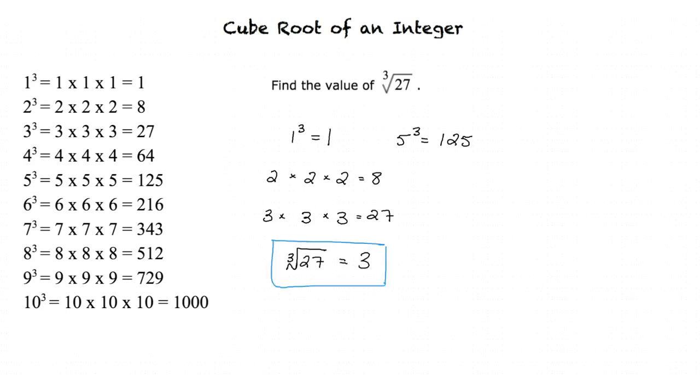This method of finding a range may not seem too useful now, but later on, when we take a cube root of a number that doesn't result in an integer answer, it will be useful for determining which two integers the answer will fall between.